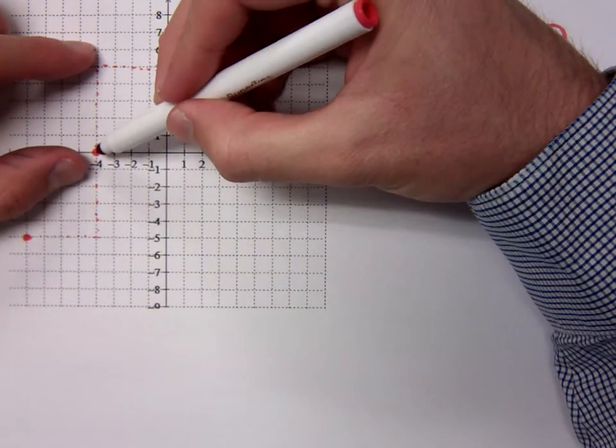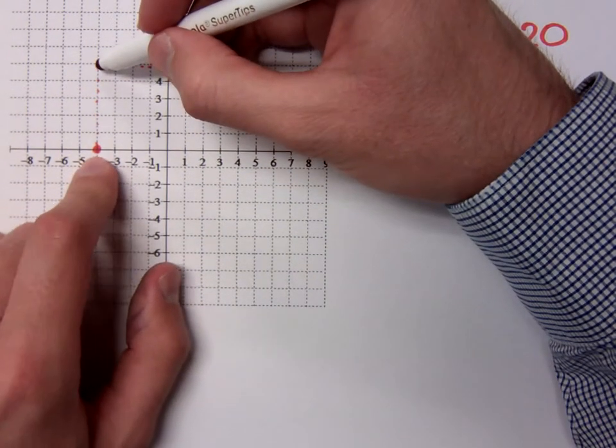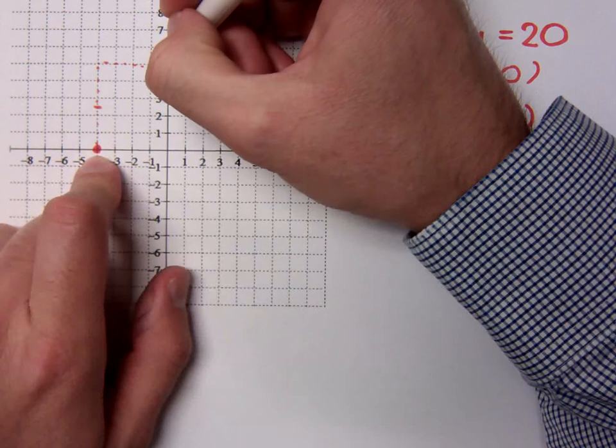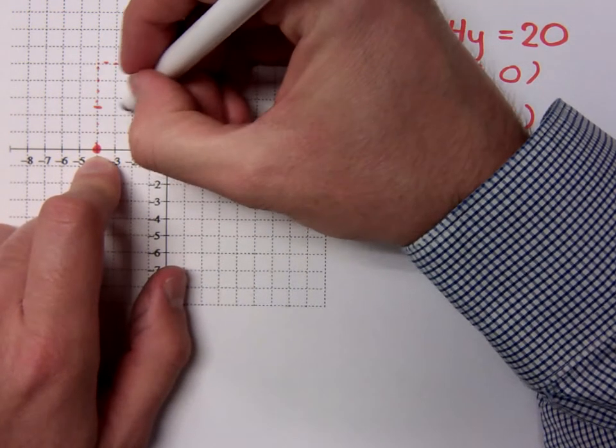We said here this was a change of 5. What's half of 5? It's 2½. Now, the run was 4. What's half of 4? Alright, so go up 2½ and over 2.